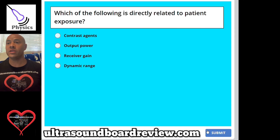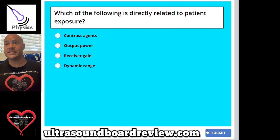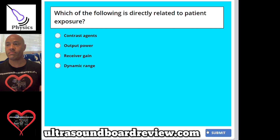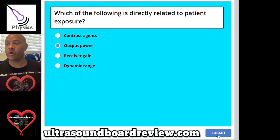Question 59: Which of the following is directly related to patient exposure? A, contrast agents; B, output power; C, receiver gain; or D, dynamic range. The answer is B, output power.